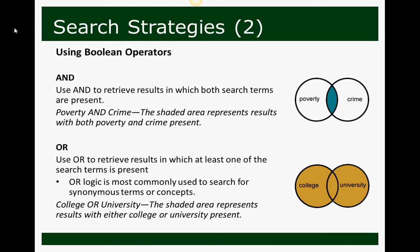Look at OR. You use OR to retrieve results in which at least one of the search terms is present. OR logic is most commonly used to search for synonyms or synonymous terms or concepts. So if we were looking for 'college OR university' and wanted results that used either of those two terms, we would use OR. The shaded area on the Venn diagram represents those results — OR is going to give you more results, pulling all results that use the word college or university.